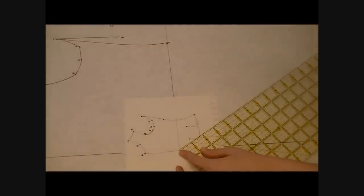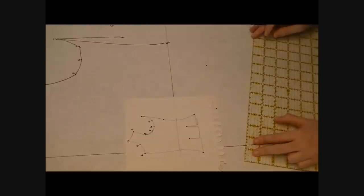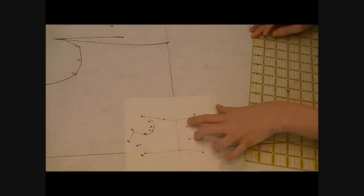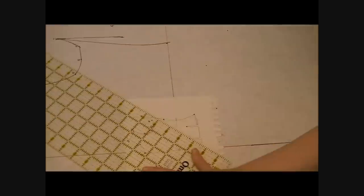Now we're going to plot out the hip part of the pattern and it's the exact same process. As you can see on the pattern tracing, one of the gore points is higher than the other, so you need to make sure to get that detail in. And once the new points are mapped, we connect the dots again.